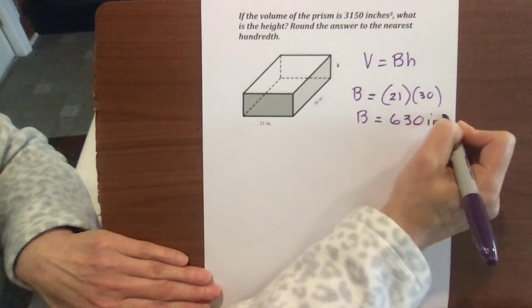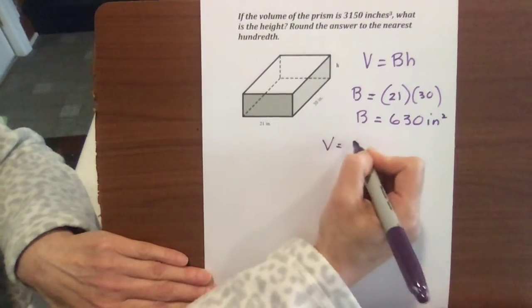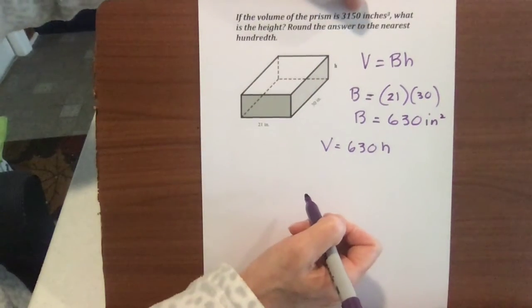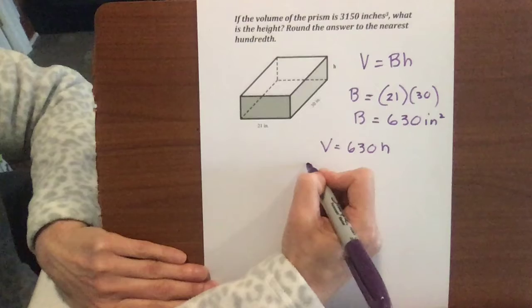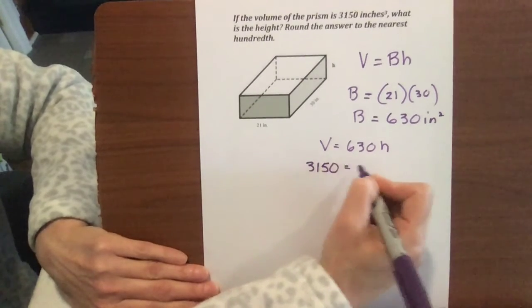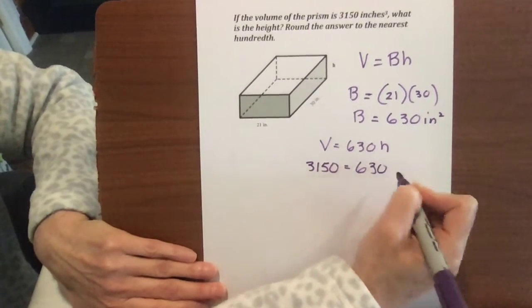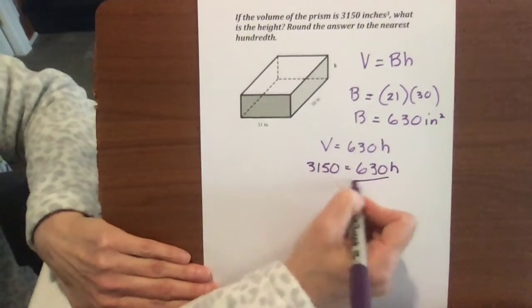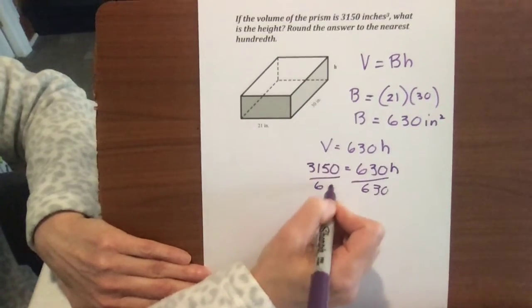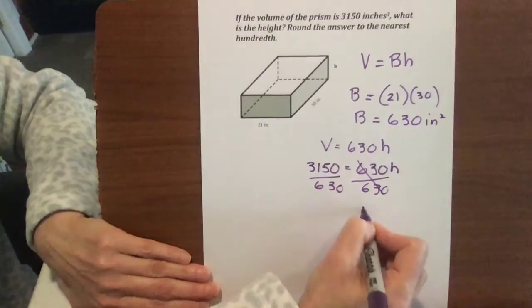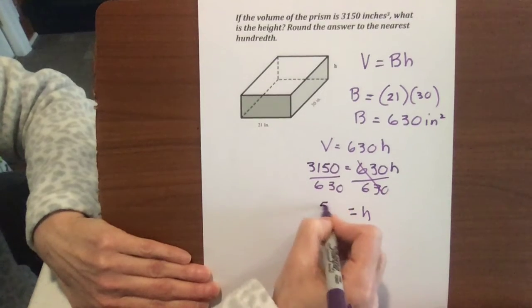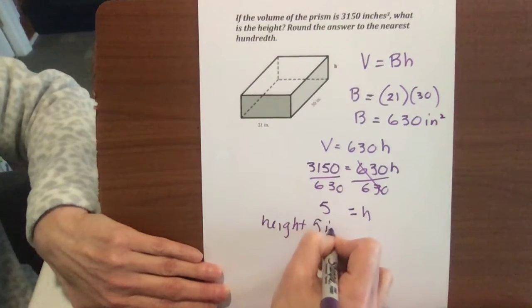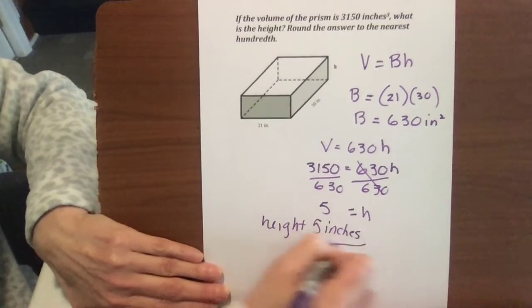And so our volume is going to be 630 times h, which we don't know. And we're going to put in our volume of 3,150. So we have 3,150 inches cubed is our volume. We're going to set it equal to 630 times h, and we'll find h. When we divide by 630, h is going to be 5. So your height is 5 inches, and there's your answer.